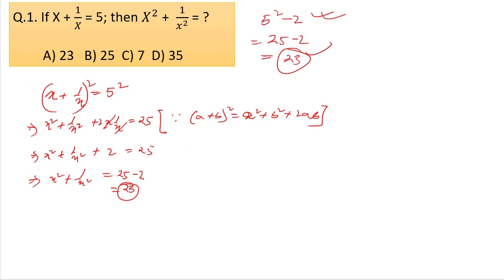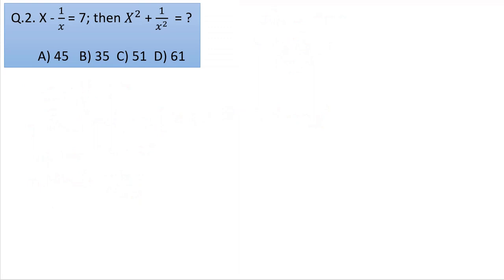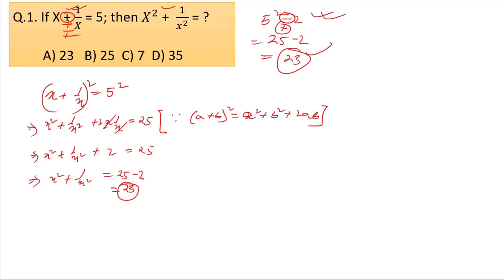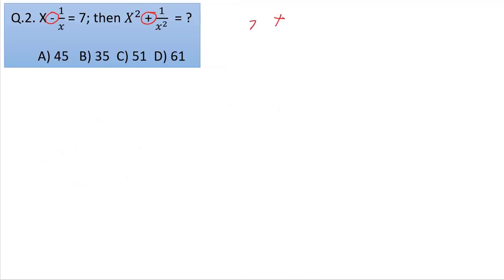Next question: answer comes to minus company — plus side. The answer comes to 7 squared plus 2, which is 49 plus 2, equal to 51. Answer is 51.